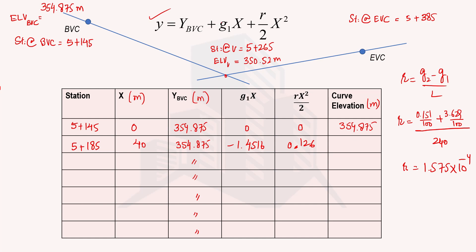For the curve elevation at station 5+185, we add y_bvc, g1x, and rx²/2 together: 354.875 plus (minus 1.4516) plus 0.126, giving a curve elevation of 353.545 meters. This is less than the previous station, confirming we are moving downward along the curve, as expected for a sag curve.